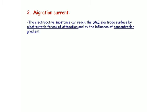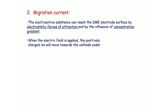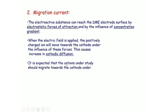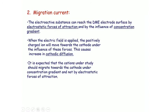Concentration gradient means the flow of species from higher concentration to lower concentration. When the electric field is applied, positively charged ions move towards the cathode under the influence of these factors, causing an increase in cathodic diffusion. It is expected that the cations under study should migrate towards the cathode under the concentration gradient and not by the electrostatic force of attraction.